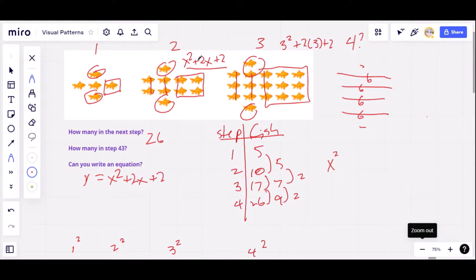In step 2, it'd be 2 squared plus 2 times 2 plus 2. So that's 4 plus 4, 8, 9, 10. We do have 10.